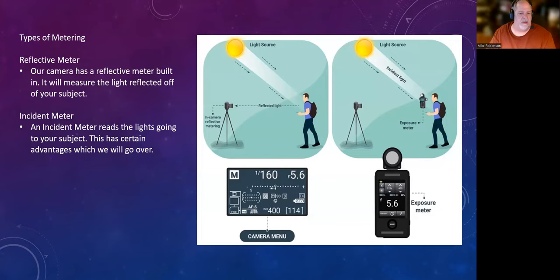Our camera has a meter that's going to basically record the light being reflected off of our subject. Well, there's another type of meter out there and actually, I carry one of these around with me most of the time. This is called an incident meter and an incident meter is actually reading the light coming to our subject. And there's a good reason why to have this.